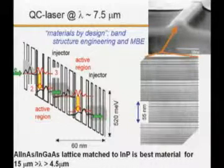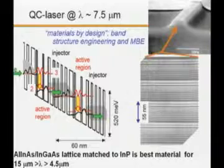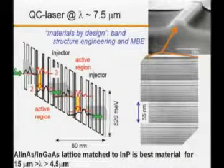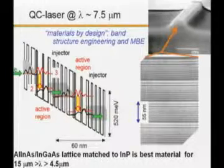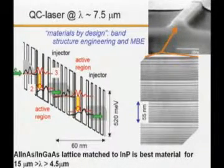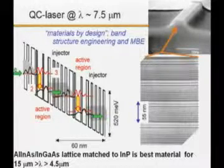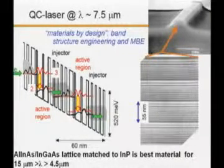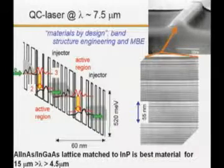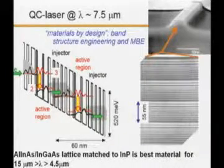This laser was made at Bell Labs in the earlier days by Claire Faist, and it operates at 7.5 micron wavelength. You can see the corresponding structures here. The depth of the well is typically 0.5 electron volt, and it uses a material system which is technologically available. The beauty of doing this QC laser is that you can use well-developed, commercially available technological materials — used either for telecom lasers or for high-speed electronics — so you do not have to use difficult small-bandgap materials. The platform is technologically very established, and that's likely one key reason for rapid progress.